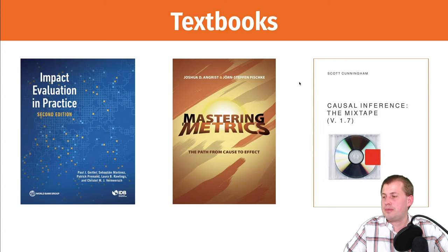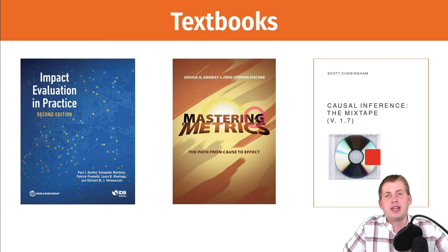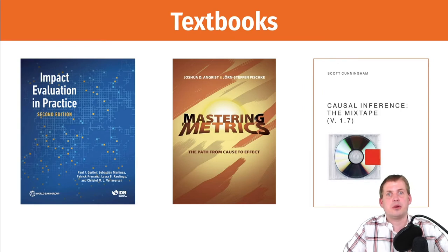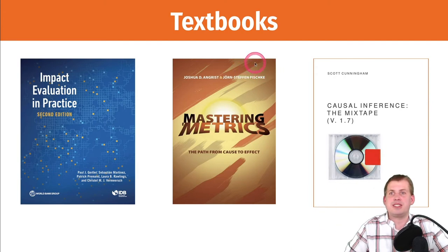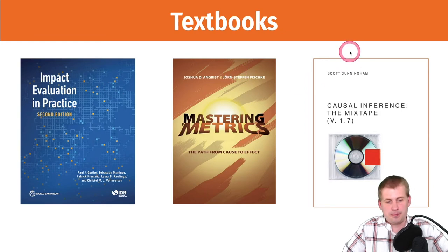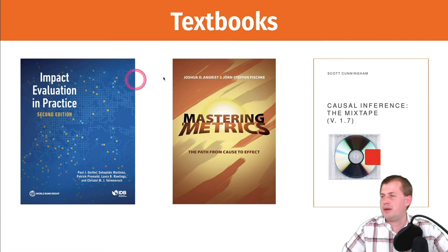Mastering Metrics by Josh Angrist and Jörn-Steffen Pischke is helpful - it is less mathy than their other most famous book, Mostly Harmless Econometrics, which is kind of the core bible of econometrics for most people but has lots of equations. Mastering Metrics is the less mathy version, which is why I'm assigning it. Impact Evaluation is pretty accessible too. The only one you have to buy is Mastering Metrics, and it's fairly cheap because it's just a small paperback, not a huge hardcover textbook that costs two hundred dollars.